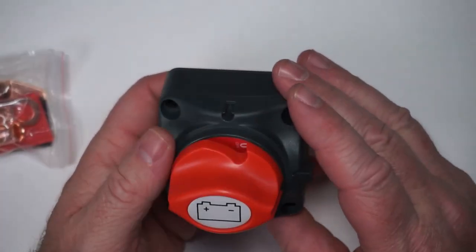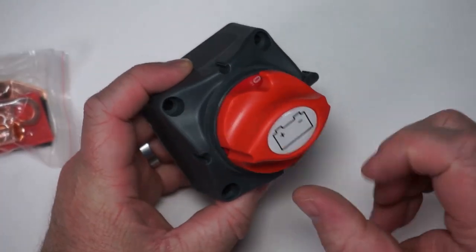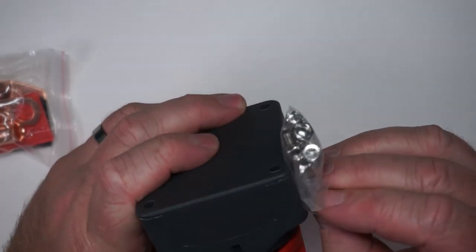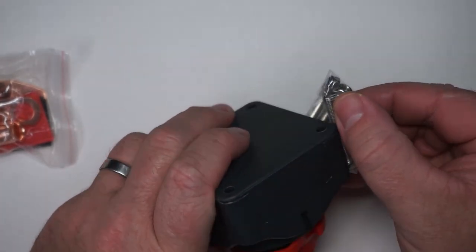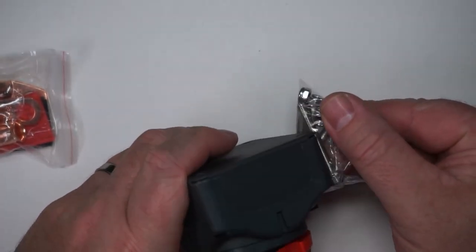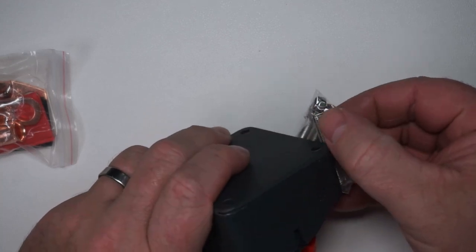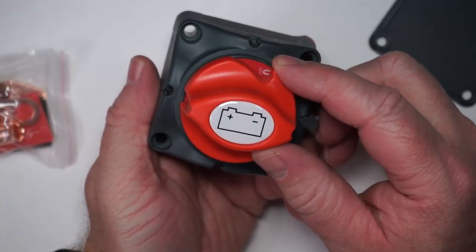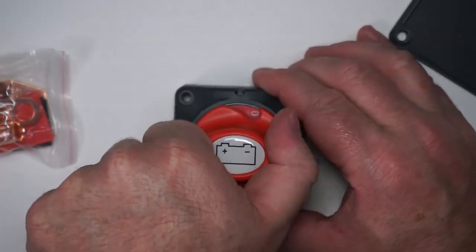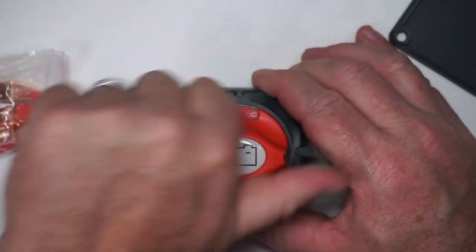Here's the switch itself. This is just a plastic body with a plastic knob. You've got the screws here, so it looks like you have about maybe two centimeters of space to secure it. Right now it's in the off position. Now it's off, on. Pretty simple.